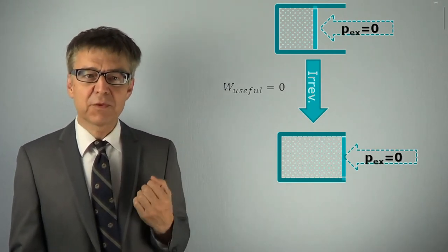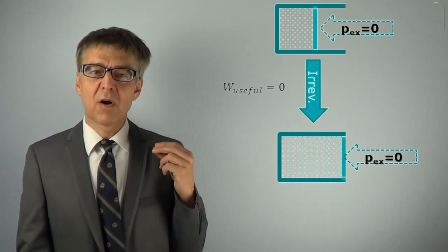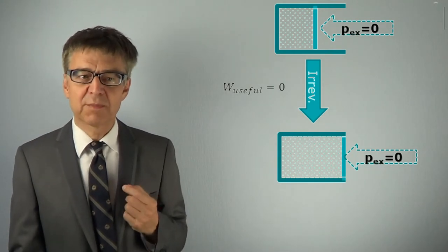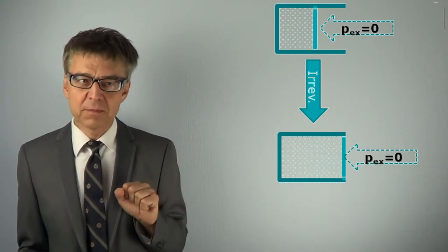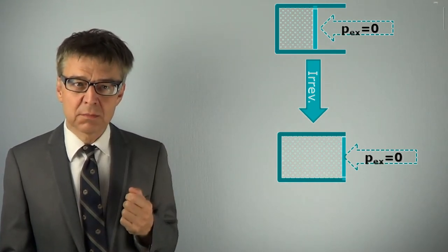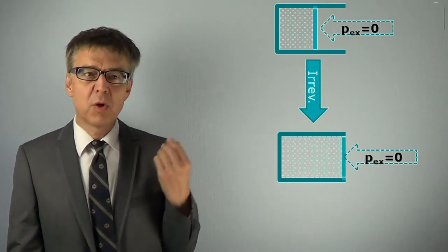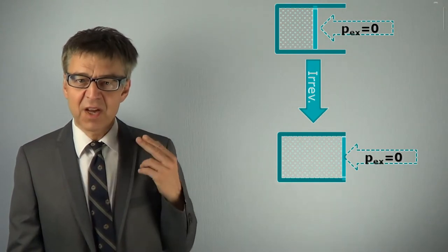As the ability of doing work has been at least partly wasted, this process is called irreversible. In fact, no work has been gained at all. The useful work is equal to zero. The process is not reversible. The system won't spontaneously move back to the initial state. Irreversible.